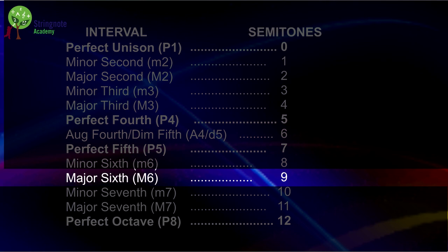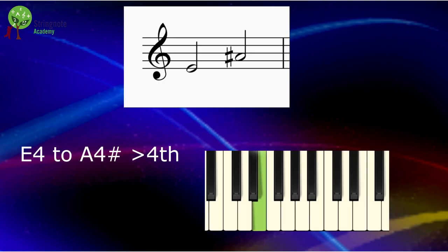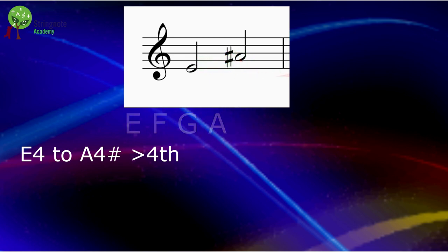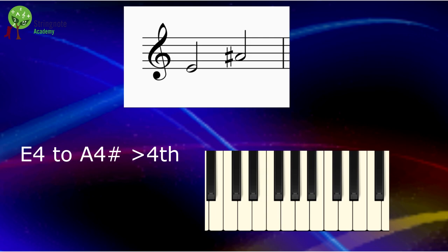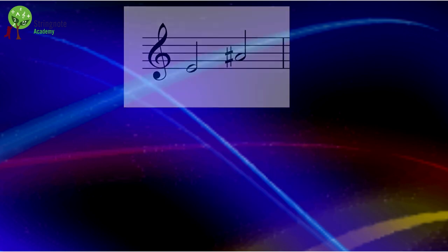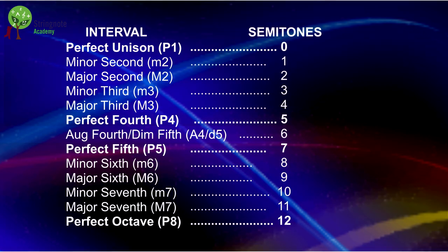Here we have a fourth — one, two, three, four — but to find the quality we need to count the semitones: zero, one, two, three, four, five, six — so we have six. Looking at our table, we have that this is an augmented fourth.